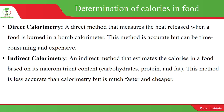Indirect calorimetry is a method that estimates the calories in a food based on its macronutrient content — the carbohydrates, the proteins, and the fats. This method is less accurate than direct calorimetry, but it is much faster and cheaper, so many people go for it. But if you want to achieve quality and accuracy, you'd want to go for direct calorimetry.